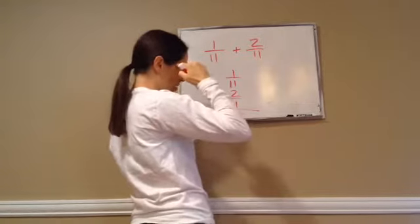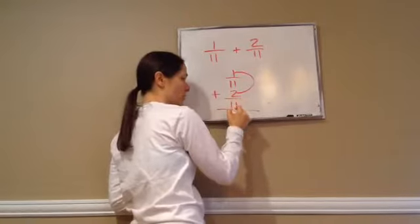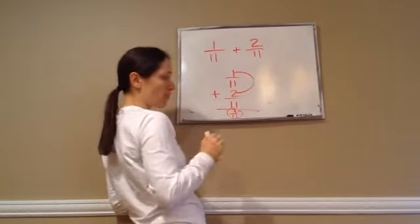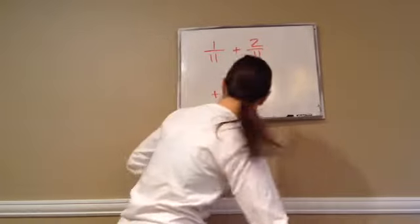And then you just add your numerators. 2 plus 1 is 3. So the final answer for this problem would just be 3/11, because we have the same denominator.